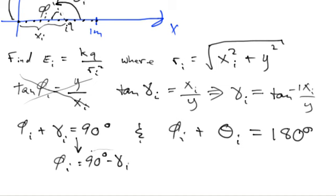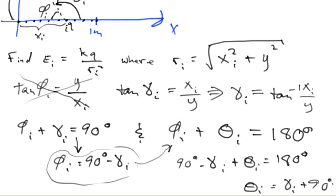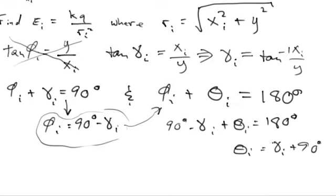So phi sub i equals 90 degrees minus gamma sub i. Plugging that in: 90 degrees minus gamma sub i plus phi sub i equals 180 degrees. Therefore theta sub i equals gamma sub i plus 90 degrees. That's the angle that our electric field vector is going to make with the x-axis.